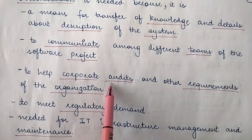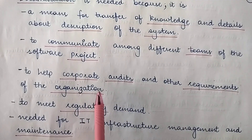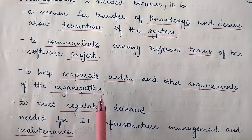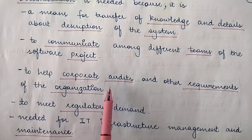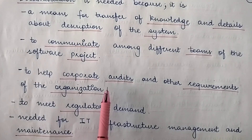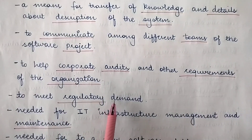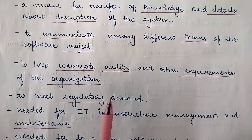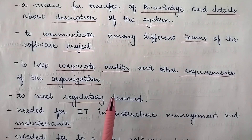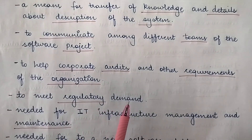Documentation also helps to cooperate with audits and other requirements of the organization. Organizations need to be audited from time to time to see if they are properly working, and documentation helps in performing those audits. Documentation is also required to meet regulatory demands — rules and regulations as per government policies — all of which need to be written down in a proper document form for future reference.